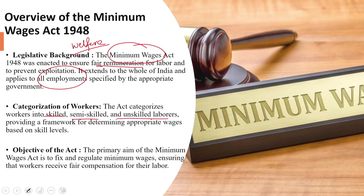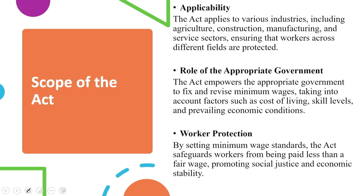The primary aim of the minimum wages act is to fix and regulate minimum wages, ensuring that workers receive fair compensation for their labour. When we look into the act, the scope is one of the main themes of this lecture. The scope of the act initially relies on ensuring workers' comfort, good health, and that basic physical needs are met, making sure workers are paid fairly and have a respectable living and reputation in the community.